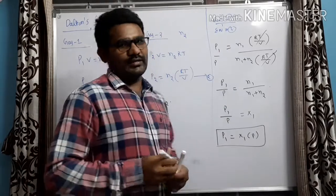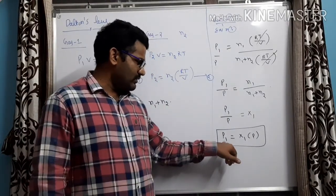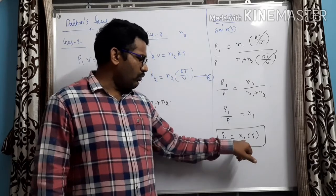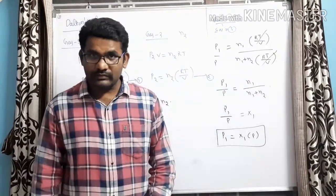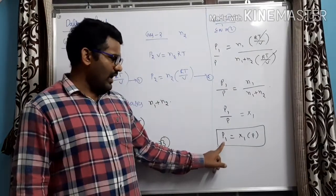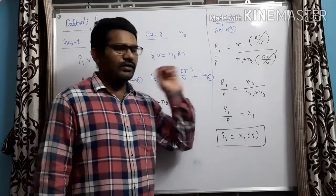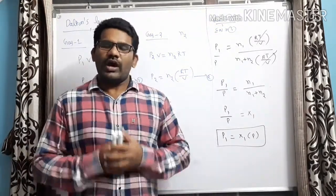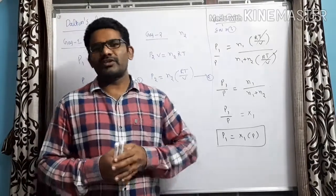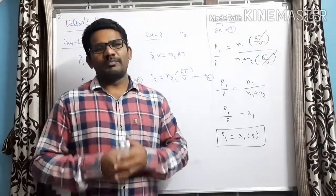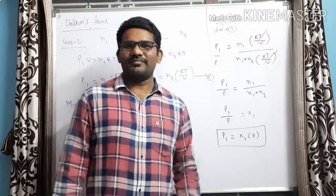This indicates that the partial pressure of a gas is the product of the mole fraction of that gas and the total pressure. I repeat: partial pressure of a gas = mole fraction × total pressure. I hope you have understood this concept of Dalton's Law of Partial Pressures. If you like this video, please like, share, and don't forget to subscribe. Thank you for watching.